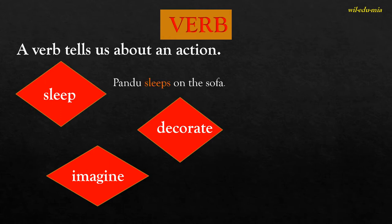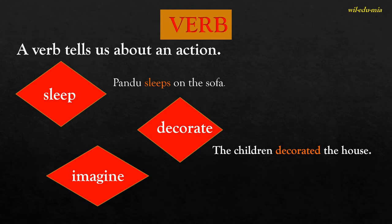Verb. A verb tells us about an action — it's a doing word. For example, 'Pandu sleeps on the sofa' — sleep is an action word, so it's a verb. 'The children decorated the house' — decorate is a verb. 'You must imagine that you have wings' — imagine is an action word, so it's a verb.